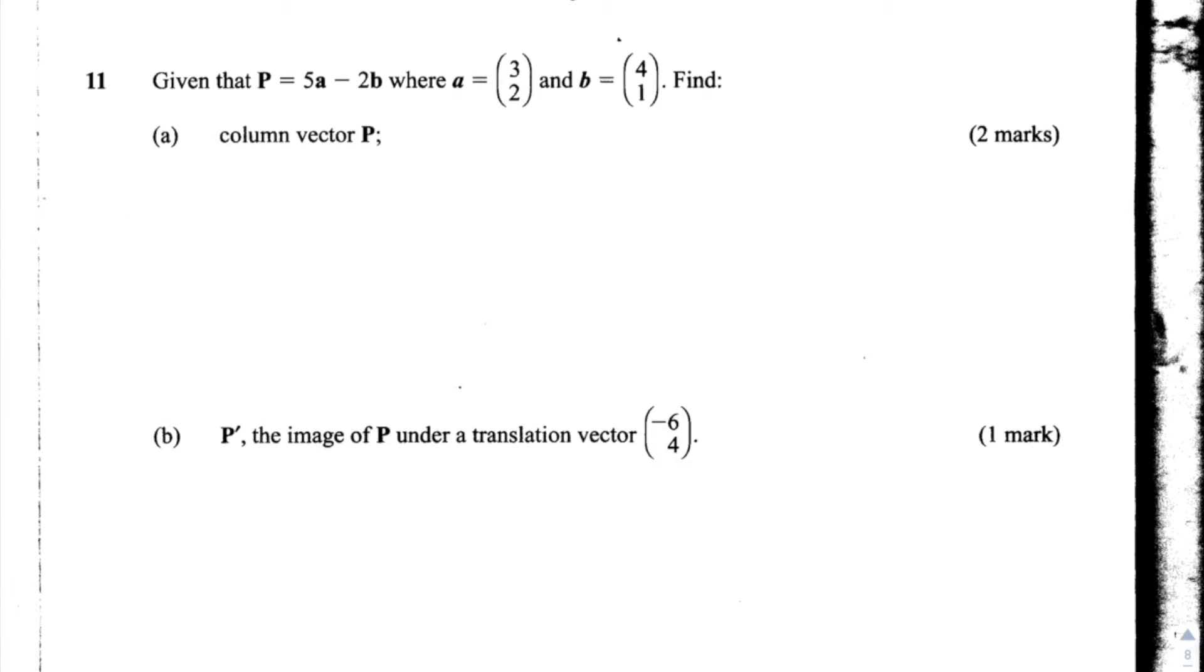This is question number 11 of the 2015 KCSE paper. This question is about vectors and it says, given that P is equal to 5A minus 2B, where A and B are vectors, where A is (3, 2) and B is (4, 1). So A is 3 in the x direction and 2 in the y, and B is 4 in the x and 1 in the y. Find column vector P.